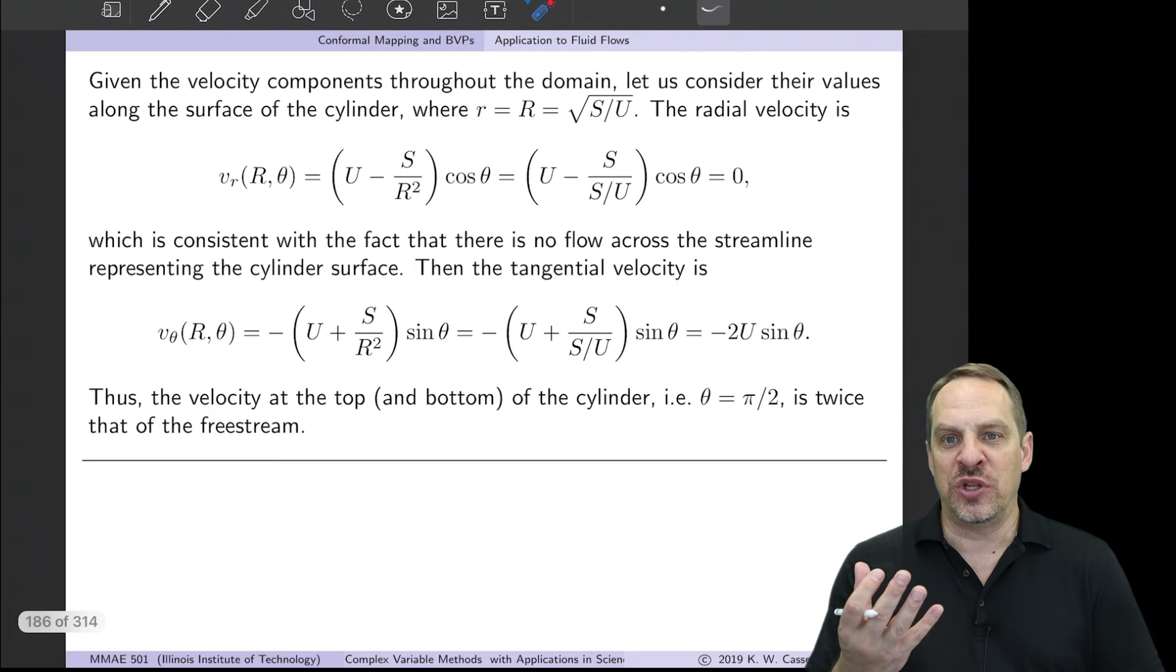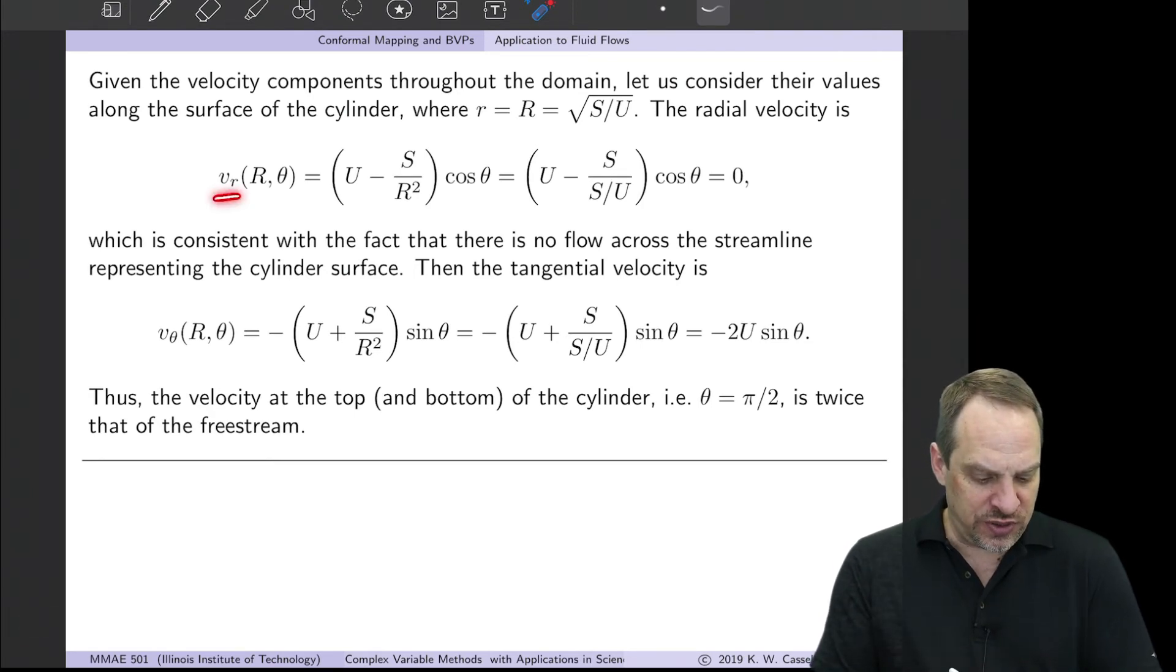Now let's consider this flow a little bit further. Let's take a look at, for example, what is the radial velocity vr on the surface of the cylinder? So when little r equals big R, what is the value of that radial velocity? Well, here's the general expression for vr: U - S/r² times cos θ. But let's substitute for r, R. But R is √(S/U). So if I substitute that in and simplify it, you see the S's cancel, and I have 1/(1/U), so that's just U. U minus U is zero, so I get zero.